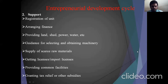The second is support. Support includes registration of a business entity, arranging finance, providing grants, sharing power, water, etc., guidance for selecting and obtaining machinery, supply and securing raw materials, obtaining licenses or import licenses, providing common facilities, and renting tax relief or other subsidies.